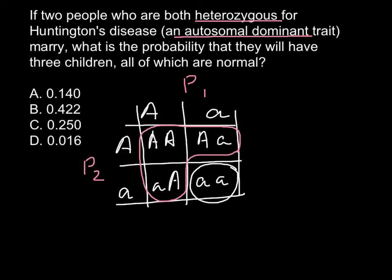So this gives us one out of four possibility for the child to be unaffected. And the question also is, what is the probability for three children to be normal?